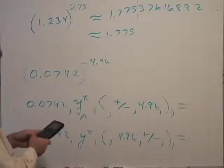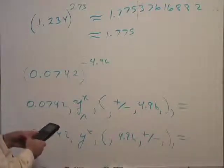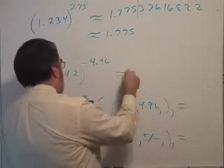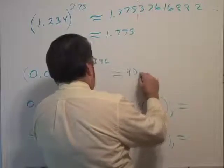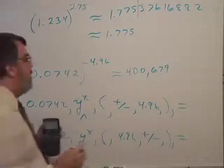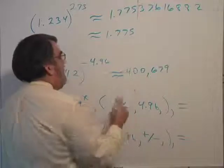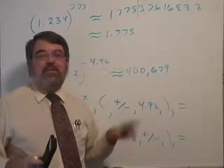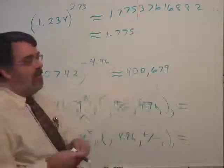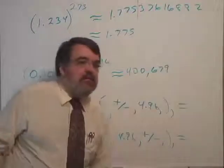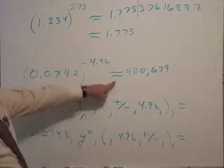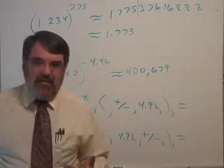All right. So we should get 0.0742 raised to the parenthesis negative 4.96. Close parenthesis. And I get approximately 400,679. Okay. Now, I rounded that off to a whole number. Why? Because I have six significant places here. Six significant digits. And so if I want to throw in decimal places, it's not going to matter. Because this is a very large number. So anyway, that was a pretty large number. 400,679. I like to put the little wavy equals there so that the reader knows that this is an approximation. It's not an exact answer.